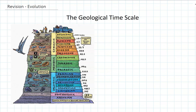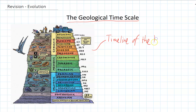We start the evolution topic by looking at the geological timescale. The geologic timescale is basically just a timeline of the history of the Earth, and it's broken up into eons and periods, which all have names. Some of the ones you might be familiar with are the Jurassic period, the Cretaceous period, and the Triassic period — these are the times when the large and most famous dinosaurs lived.